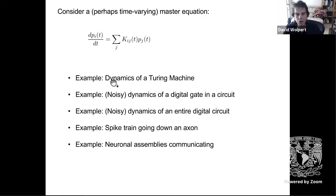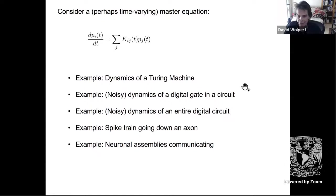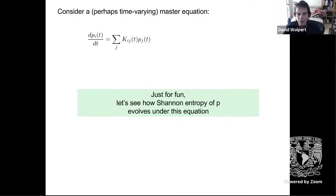In particular you can talk about potentially noisy dynamics of a Turing machine, digital gates in a circuit, the entire circuit as a whole, spike trains going down an axon, multiple neurons communicating in neuronal assemblies, genetic networks evolving — really just about everything. So, because we love Claude Shannon so much and he did so many things, let's see what happens if we evolve his entropy under this particular dynamics.